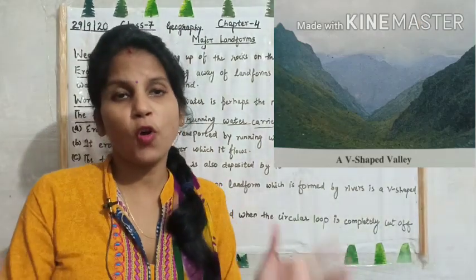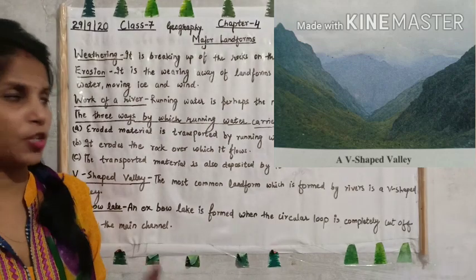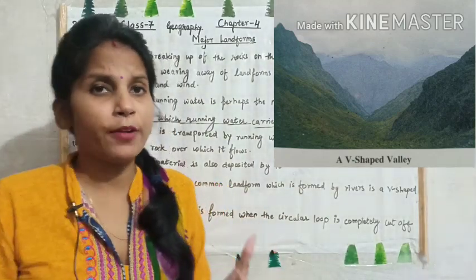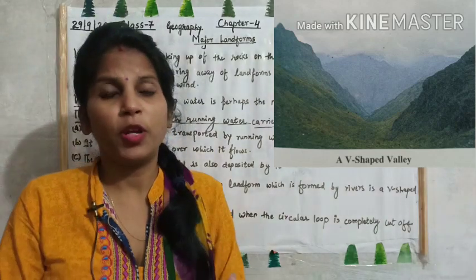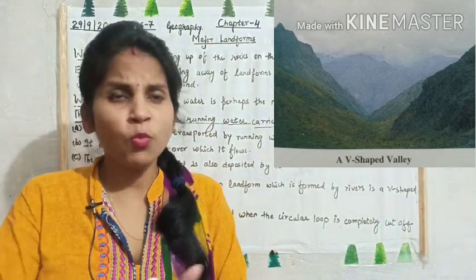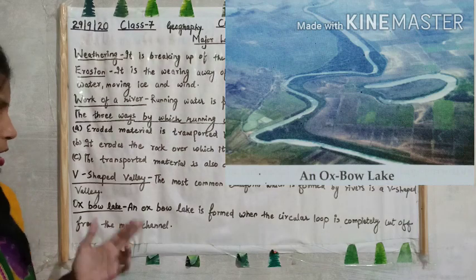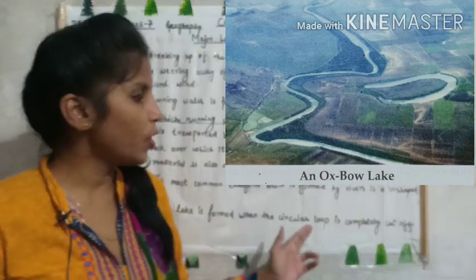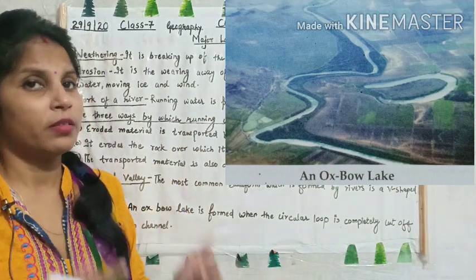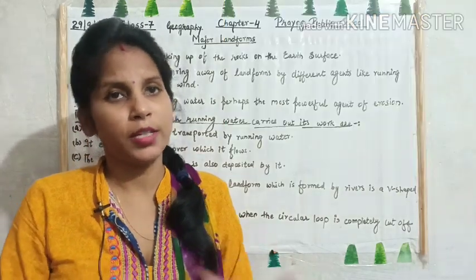There are many landforms formed by the action of running water. The most important is the V-shaped valley, which is the most common landform formed by a river. Running water also forms oxbow lakes — when a river forms a circular loop-like formation, that is called an oxbow lake.